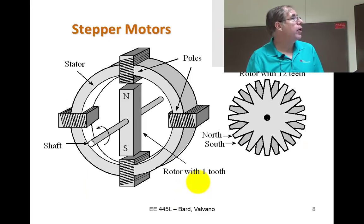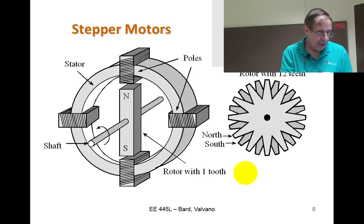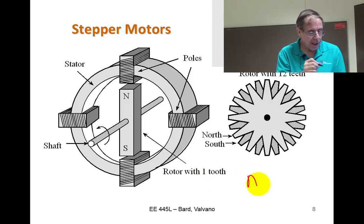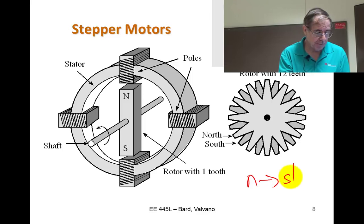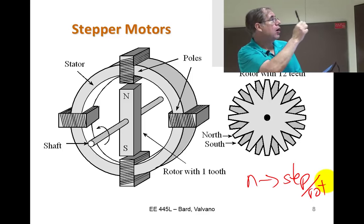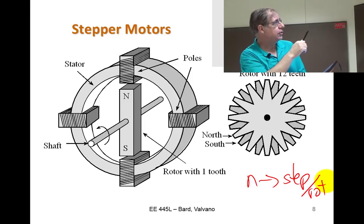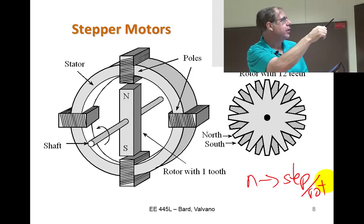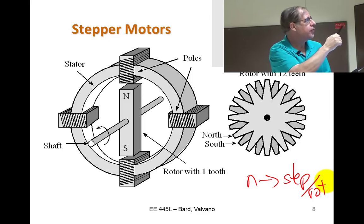There's a formula relating the number of teeth to the number of steps per rotation. For instance, if there are four teeth, this particular motor takes four steps per rotation.